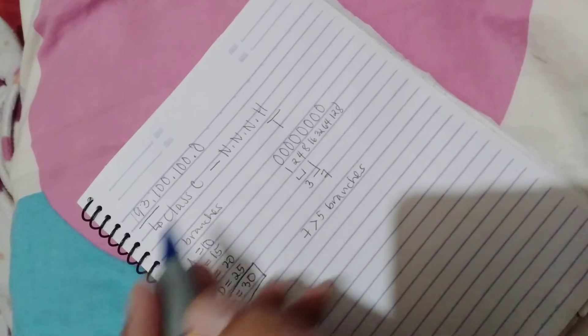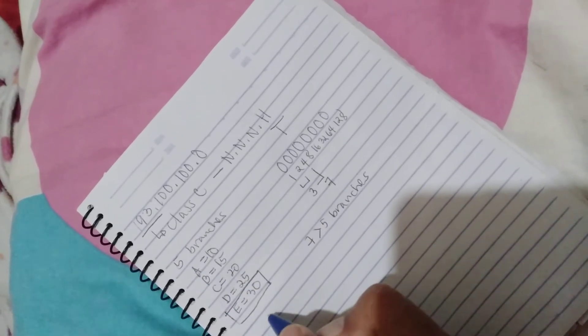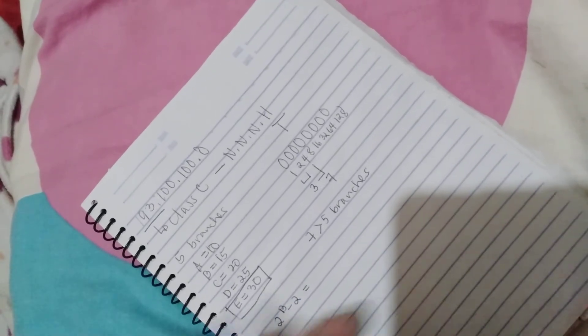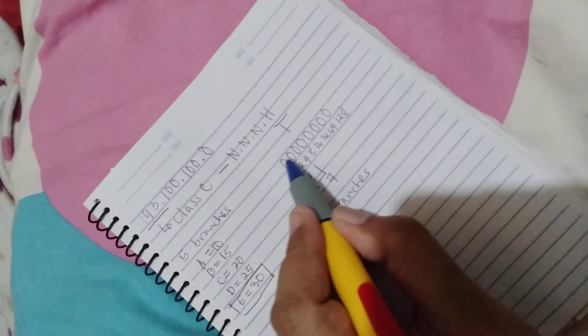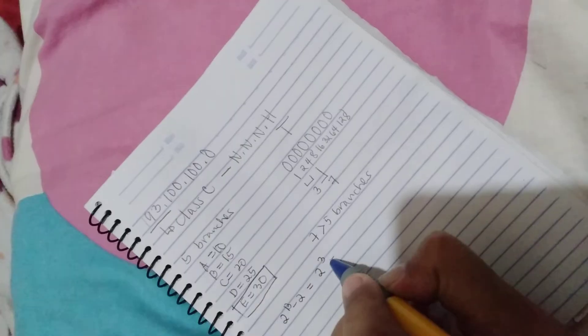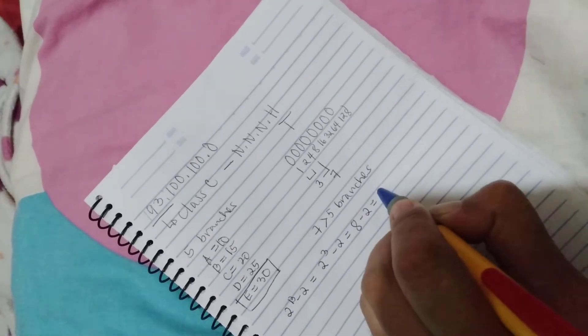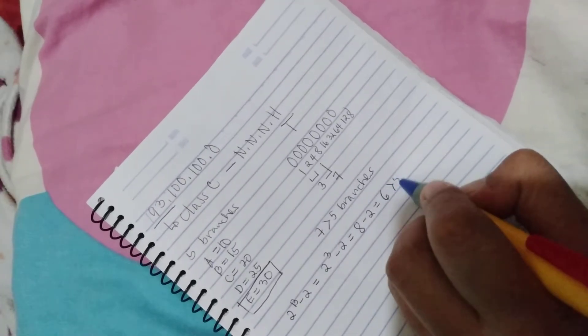We will use a formula: 2 raised to B minus 2. B stands for borrow, so 2 raised to 3 (we borrowed three bits: 1, 2, 3) minus 2, that is 8 minus 2 equals 6. So 6 is greater than five branches.